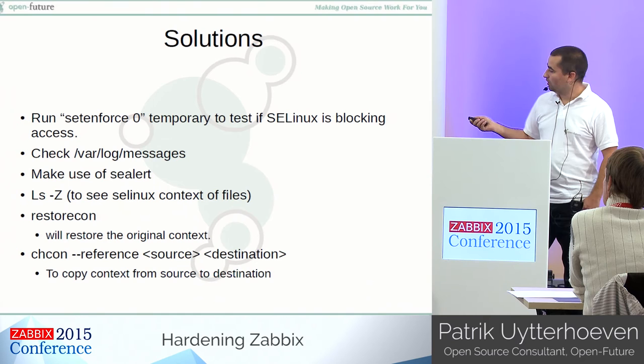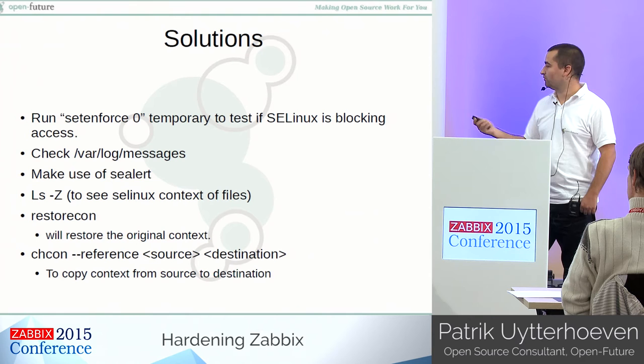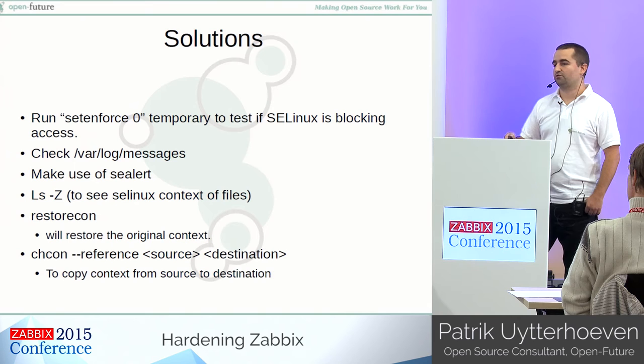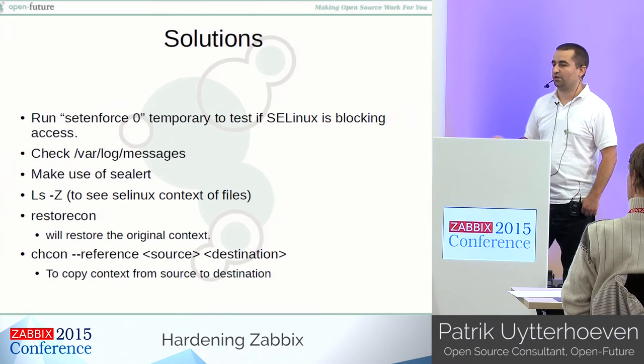Another tool is `chcon --reference`. Here you can point to a source and a destination. If you want the same context as another file, you point to the file with the correct context and then to the file you created yourself in vi, for example, and it will copy the context from one file to the other. So if you create a configuration file in your HTML directory with no context, you can copy the correct context from another file in that directory — an easy solution to create the correct context on your files.